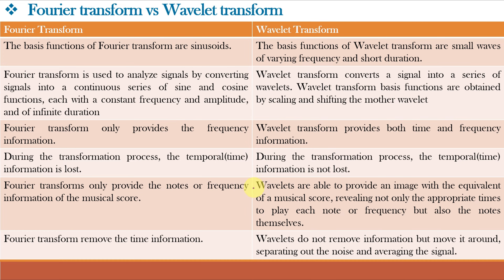Whereas, for Wavelet Transform, Wavelets are able to provide an image with an equivalent of a musical score, revealing not only the appropriate time to play each note or frequency, but also the notes themselves. Fourier Transform removes the time information; Wavelet Transform does not remove but moves it around, separating out the noise and averaging the signal. So, Wavelets have a very important application in noise removal, averaging and image compression.